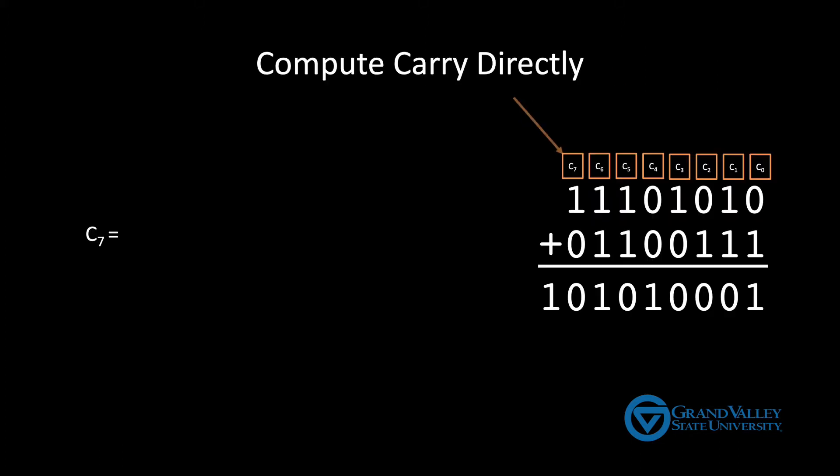We'll begin with the most significant carry in which we'll call C7. We call it C7 because it's the carry in to column number seven. Now think about the different situations in which C7 will be true. One case is when both bits from the previous column are ones. In this case there'll be a carry into column seven regardless of what any of the other input bits are. So C7 is true whenever A6 and B6 are both true.